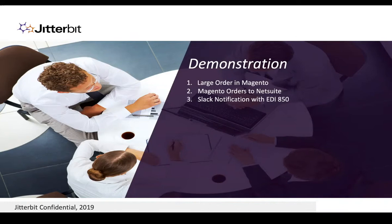In today's scenario, we'll assume I'm a distributor that occasionally receives surge orders, which depletes more than half of any particular item I may hold in stock. To simulate this scenario, we'll create an order in Magento that includes a large number of sweatshirts and we rely on Jitterbit to sync that order to NetSuite sales orders and purchase orders. Jitterbit's going to detect that large order and notify me in Slack with the ability to push an EDI 850 out to my suppliers for the purpose of replenishing my sweatshirts. Upon pushing that out to my suppliers, it'll also push the EDI out to an SFTP site for my own auditing and reuse purposes.